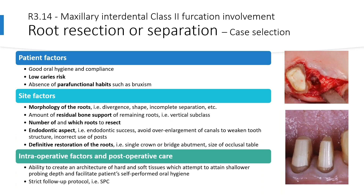With regards to root resection or separation, additional factors to consider include: at the patient level, low caries risk and absence of parafunctional habits such as bruxism; at the site level, the morphology of the roots including divergence, shape, and incomplete separation; the amount of residual bone support of the remaining roots; the number of and which roots to resect; the endodontic aspect; and the definitive restoration — whether the tooth will serve as a single crown or bridge abutment — and considering the size of the occlusal table.